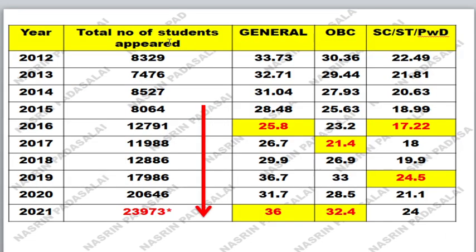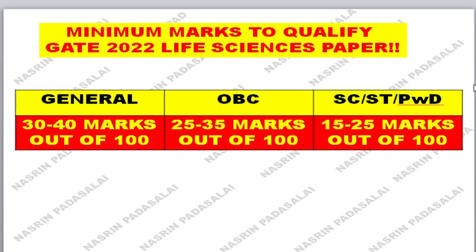The total number of candidates appearing also plays an important role. If more students appear, the cutoff will be higher; if fewer students appear, the cutoff will be lower. With respect to category-wise cutoffs, I have uploaded a reference video — please do check it.